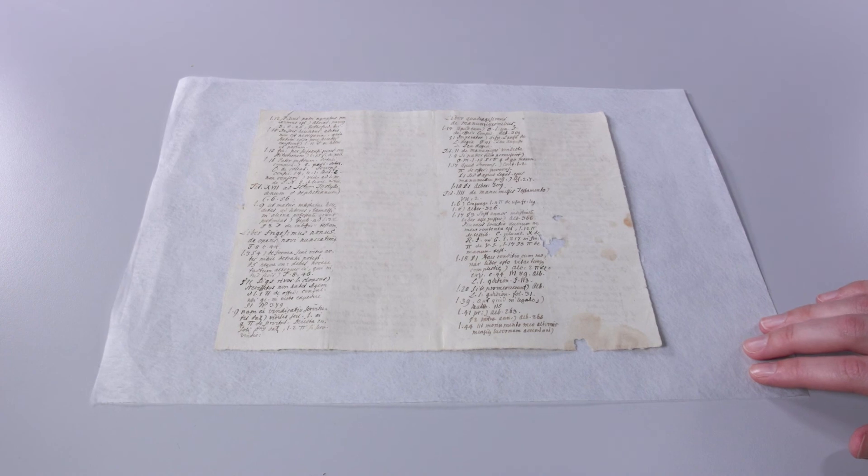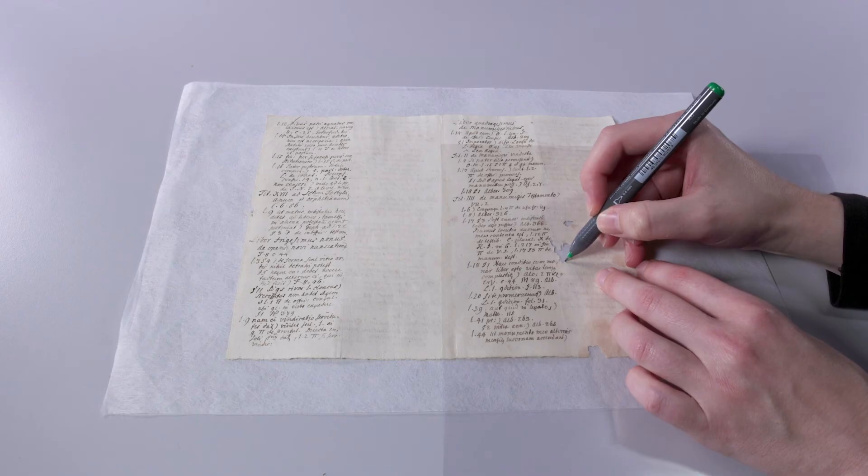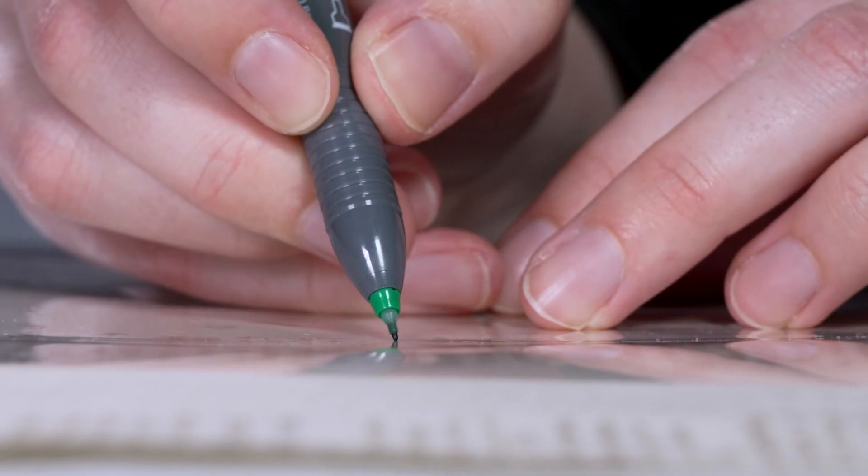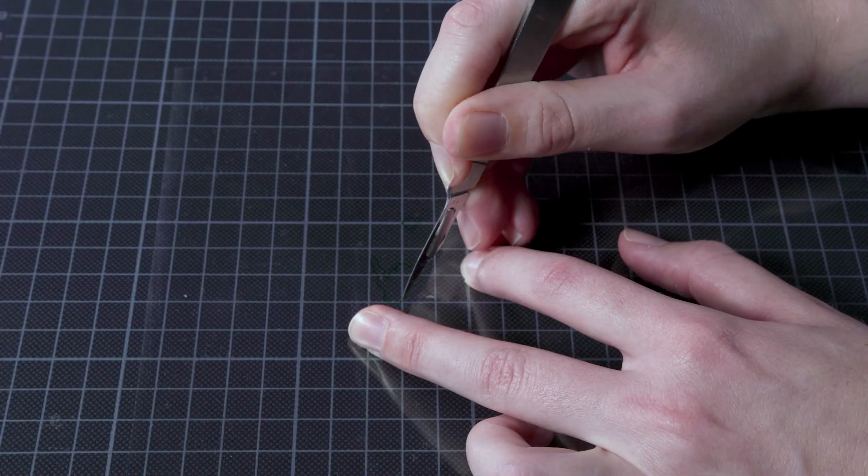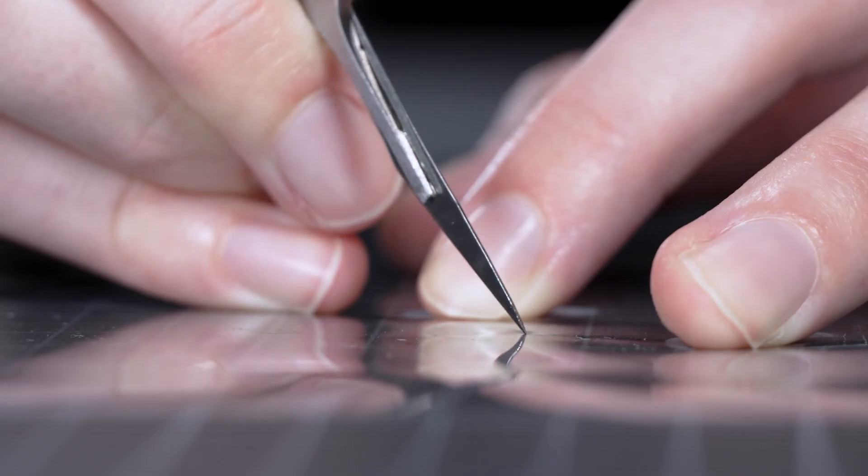If the object cannot be washed or processed on a vacuum table, it can be infilled appropriately using a template made from supplementary paper. The loss is traced on a transparent foil placed on the object and then cut out.